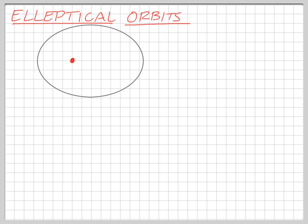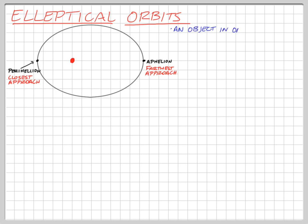Here's our ellipse with the Sun shown. The point where the planet is closest to the Sun is called perihelion, and the farthest point is called aphelion. An object in orbit around the Sun is moving most quickly at perihelion — its closest approach — and slowest at aphelion — its farthest approach.